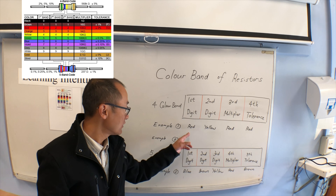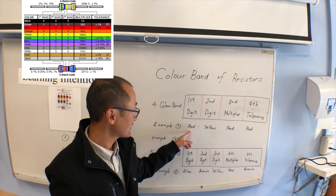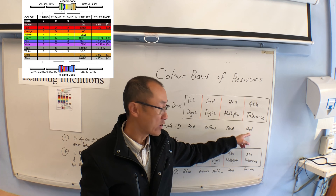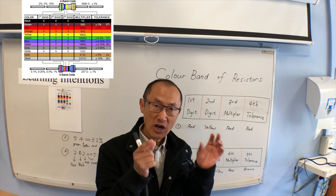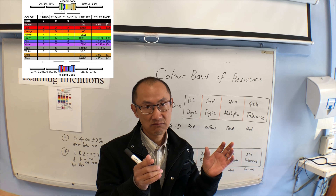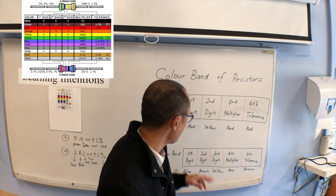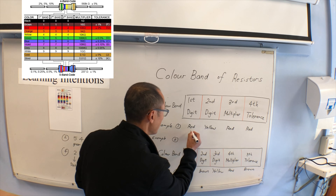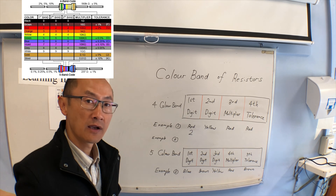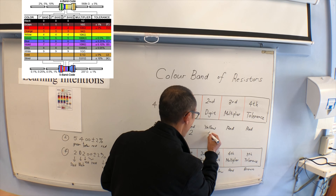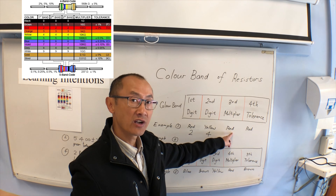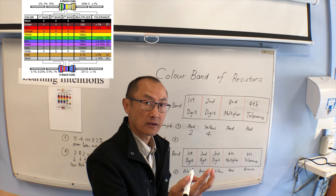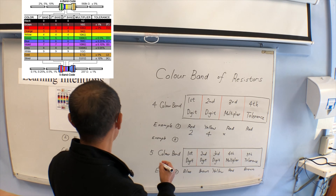I'll give you an example. When you have a four color band resistor and the first color is red, second is yellow, number three is red, and number four is red — you have to get the chart of the color band. I will show you on my video. Red represents number two, yellow represents number four, and the third one is the multiplier — times one hundred.